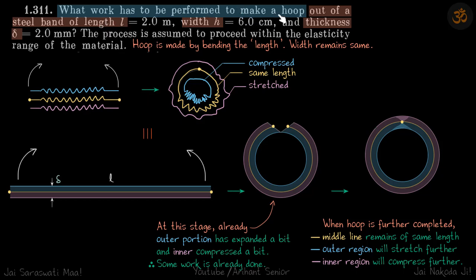What work has to be performed to make a hoop out of a steel bend of length L, width h and thickness delta? Now there might be confusion from which side we have to bend it. So let me write it here that hoop is made by bending the length.